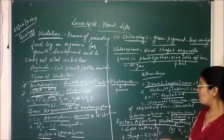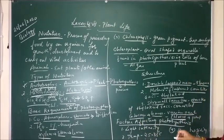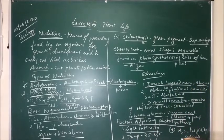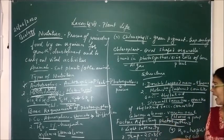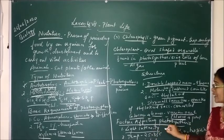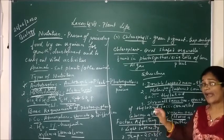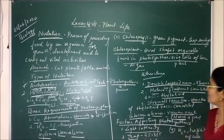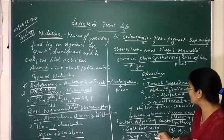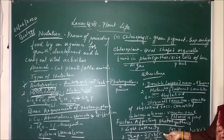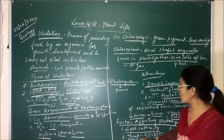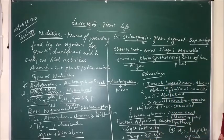Now let us discuss the factors affecting photosynthesis. There are mainly four factors. First is light intensity — if the intensity of light is more, photosynthesis increases, and if less, photosynthesis decreases. However, very high light intensity can also decrease the rate of photosynthesis. Second is temperature — photosynthesis takes place between 25 to 35 degrees Celsius, and if it exceeds 35 degrees Celsius, the rate of photosynthesis may decrease.